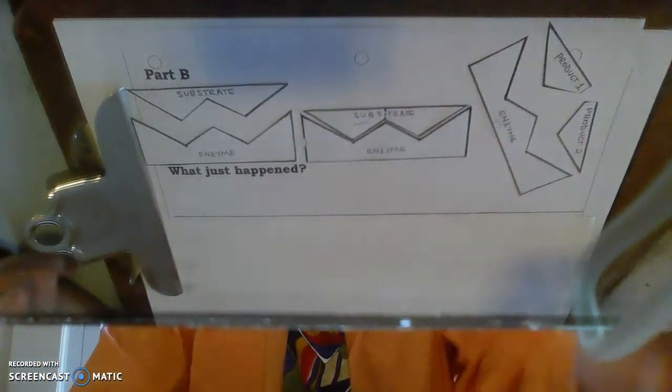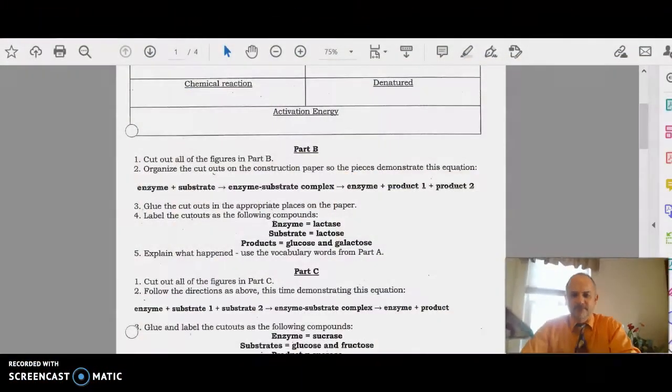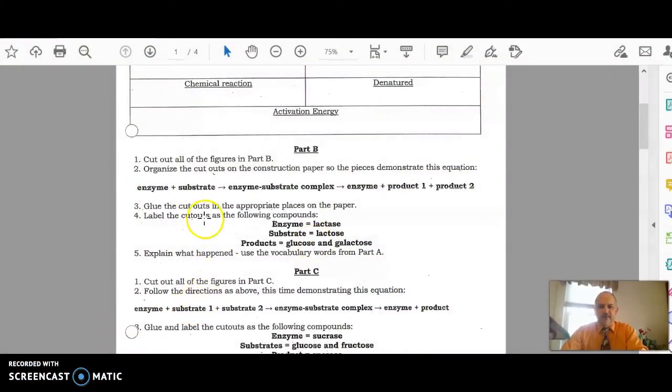And you're going to label things. So you're going to glue that down. And then it says to label things. After you've done that, label the cutouts as the following compounds. The enzyme is lactase. The substrate is lactose. And the products are glucose and galactose. So once they're glued down, I'm going to go ahead and label them.